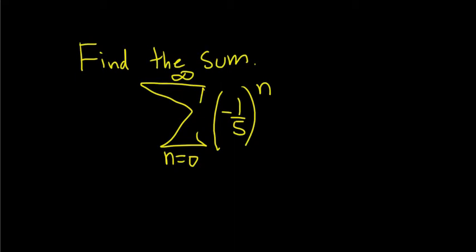Find the sum. We're being asked to find the sum, so we know that the series converges. How would you know it converges? Well, r here is negative 1/5, and this is a geometric series.